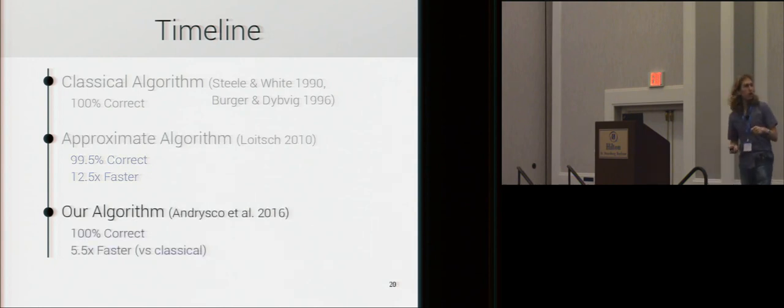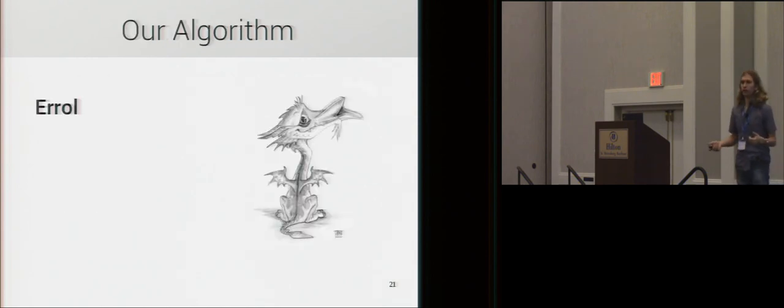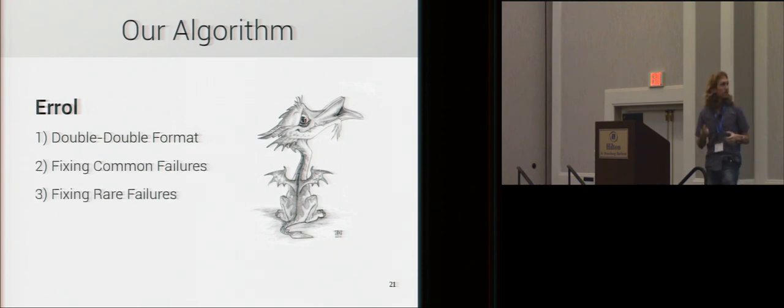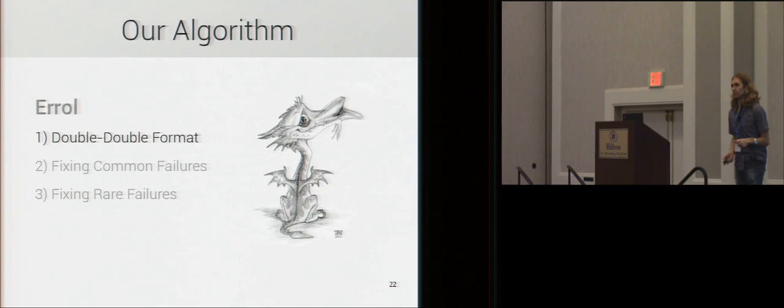So, that's the Grishu algorithm, which we'll now move on to our algorithm, and how we recover 100% correctness. So, our algorithm is called ARRL, and there's three main ideas behind it. First, we use a double-double intermediate format. Second, we then fix common failures. And then third, we fix what we call rare failures. But, to start, let's look at the double-double format.